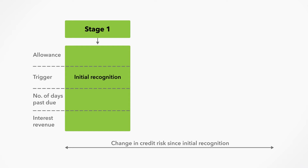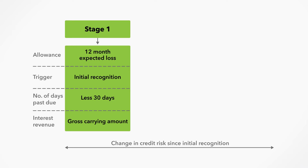Loans not more than 30 days past due are presumed to be in stage 1 unless there is other evidence of increased credit risk. The required allowance for ECL is equal to the expected loss over the next 12 months. Interest revenue continues to accrue.